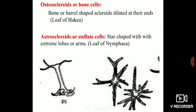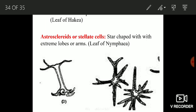Then third type is osteosclereids or bone cells. These cells are bone shaped or barrel shaped which are dilated at their ends. Example is leaf of Hakea. Here you can see these are the osteosclereids. These are bone shaped.